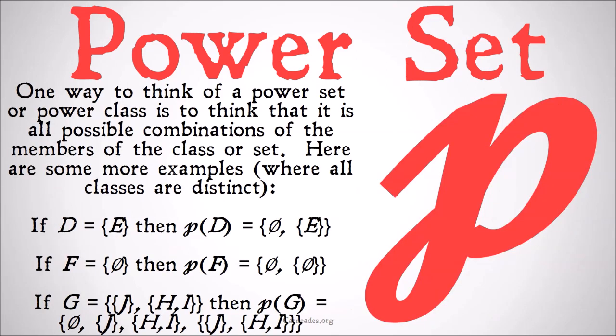One way to think of a power set or power class is to think that it is all possible combinations of the members of the class or set, including the kind of bookend cases of none of the members and all of the members.